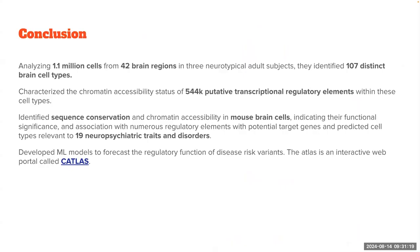I highlight this because I'm trying to explore methods that could be applied or extended to a multi-omic analysis. I didn't go deep into how they calculate the one-third conservation percentage in mouse, or how they cross-reference information with specific brain disorders, but there is a lot of important information in this article.